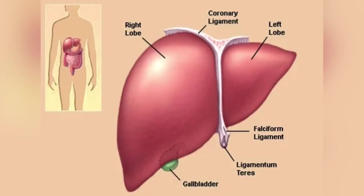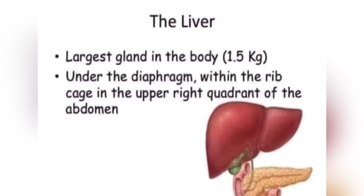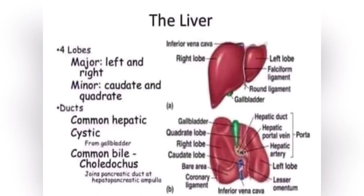The liver is just under your ribcage on the right side of your abdomen. It is the largest gland in the body, weighing 1.5 kilograms, located under the diaphragm within the ribcage in the upper right quadrant of the abdomen. The liver has four lobes — major and minor.